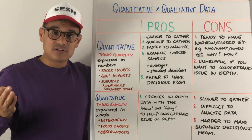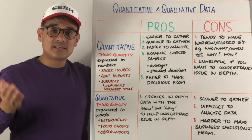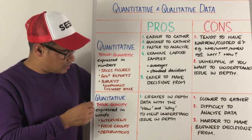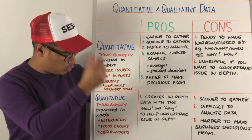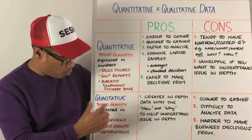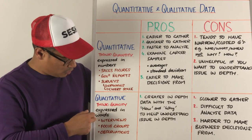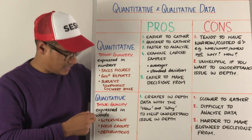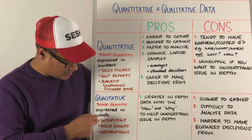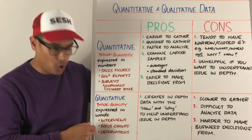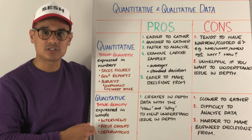The other type of data is qualitative data. Qualitative data is expressed often in words. Ways that you could gather qualitative data include interviews, focus groups, or observations.